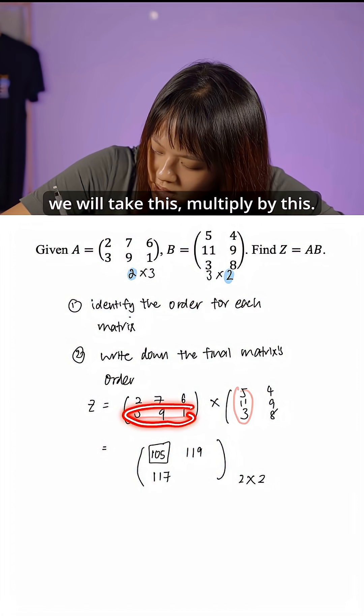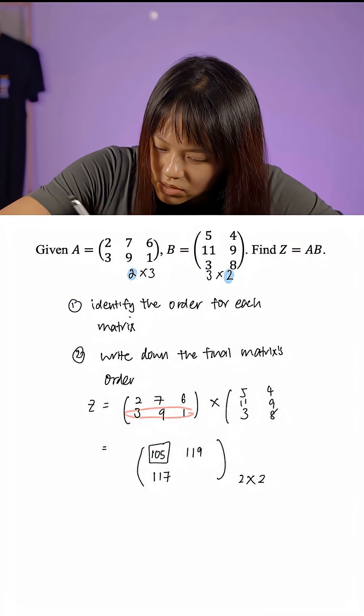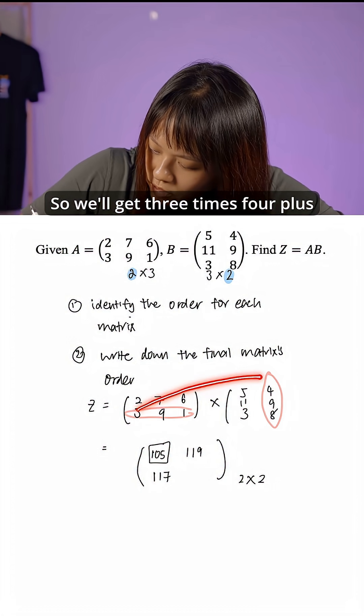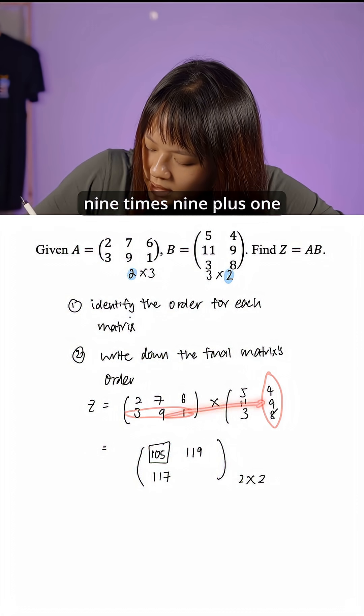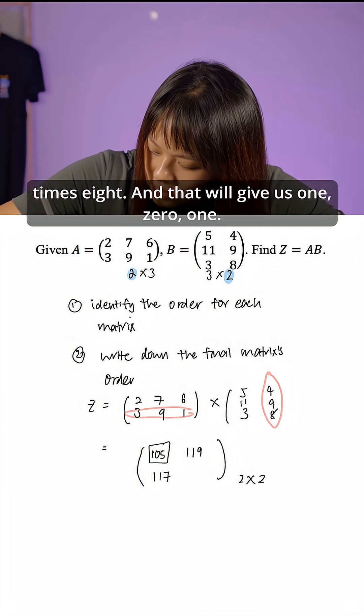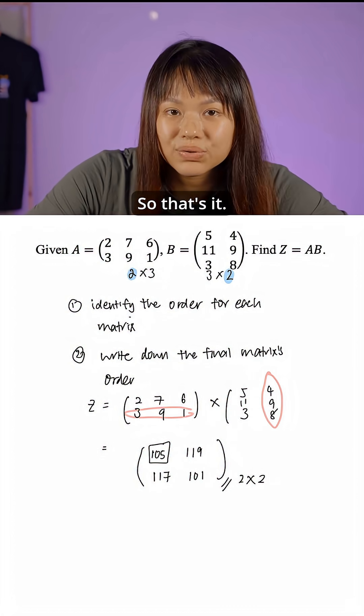For the last digit, we'll take this multiply by this. So we'll get 3 times 4 plus 9 times 9 plus 1 times 8, and that will give us 101. So that's it.